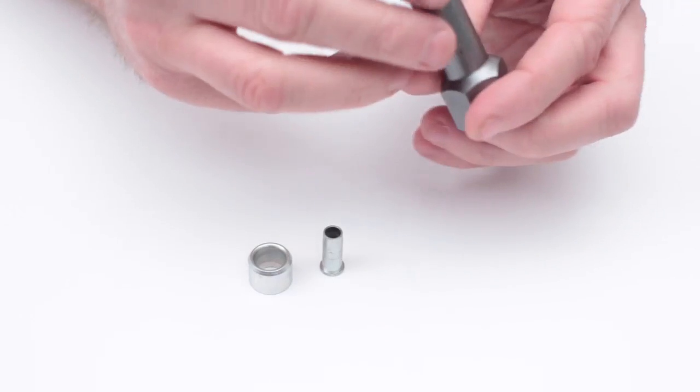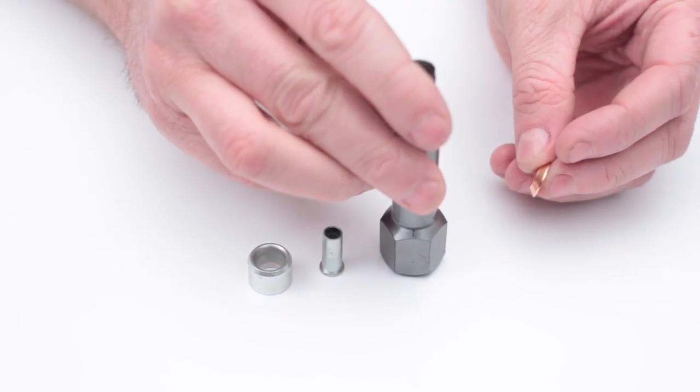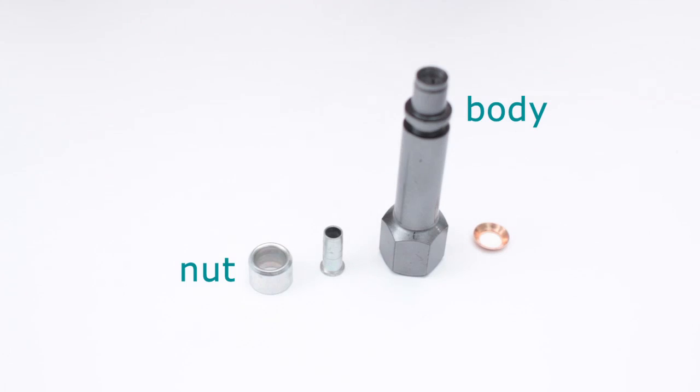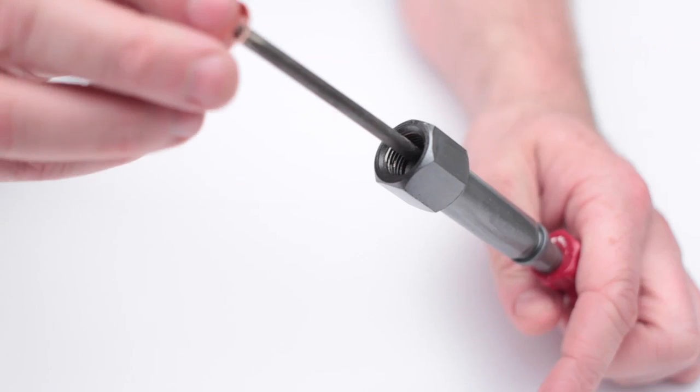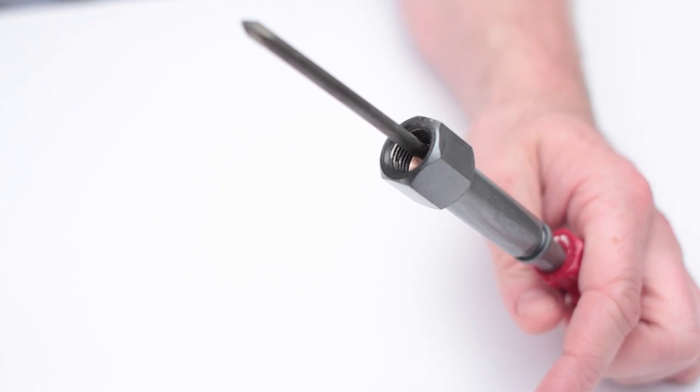The reflock fan coil connector consists of four components: the body, nut, insert, and copper washer. To aid assembly of the joint, begin by inserting a crosshead type screwdriver through the body. Next, thread the screwdriver through the copper washer with the dished side facing out.